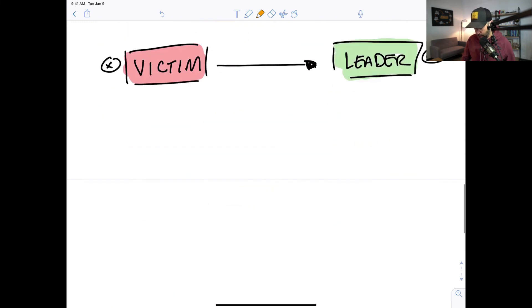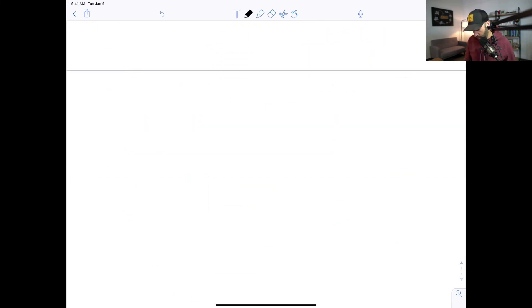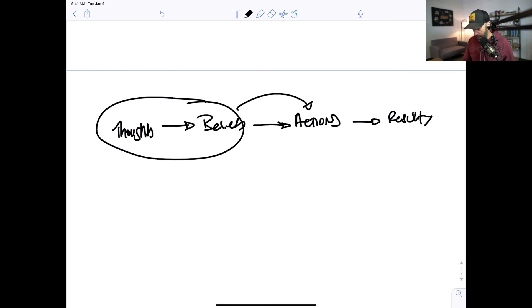Because as we've always talked about, your thoughts impact your beliefs, your beliefs impact your actions. Those actually might be reversed and your actions are what leads to results. So if you're super negative over here, you're probably going to act either out of sequence or irrationally in a way that doesn't align with the true plan and your results are going to suffer for it.